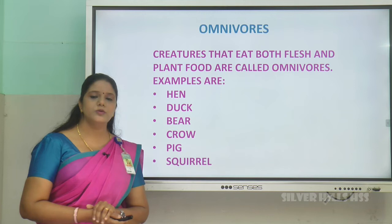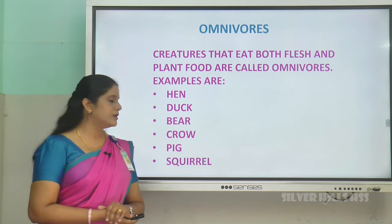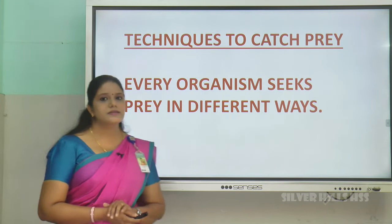Next comes omnivorous. Creatures that eat both plant food and animal flesh are called omnivorous. Examples are duck, hen, bear, crow, pig, squirrel — these all are omnivorous animals.